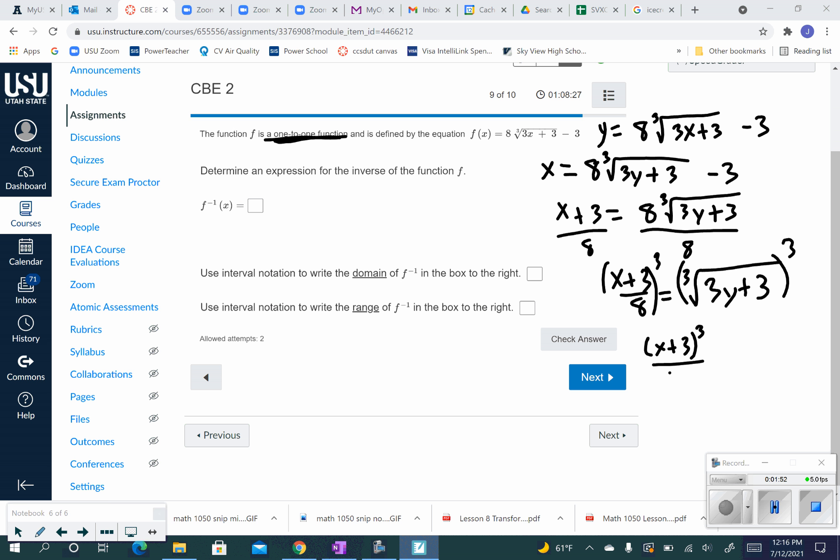512. Now I just have the 3y plus 3 left over here. I get minus the 3 over. I'm using lots of space here. I'm going to come over here just a little bit. So I end up with x plus 3 cubed over 512 minus 3 equals 3y. Divide by 3.